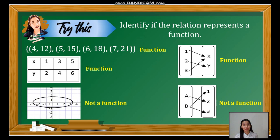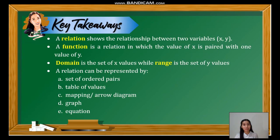Did you all get this correctly? If yes, great job. Now, let us have the key takeaways. Take note that a relation shows the relationship between two variables. Function is a special type of relation in which the value of x is paired with one value of y. Domain is a set of x values while range is a set of y values. A relation can be represented by set of ordered pairs, table of values, mapping or arrow diagram, graph, and equation. To answer the essential question — how to identify if the given relation is a function — always take note that the x value should not be repeated.